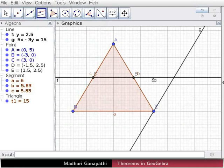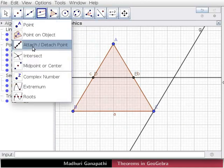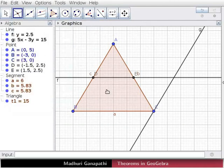Notice that lines F and G intersect at a point. Using the intersect tool, let us mark the point of intersection as F.